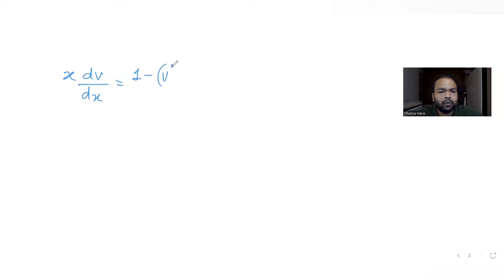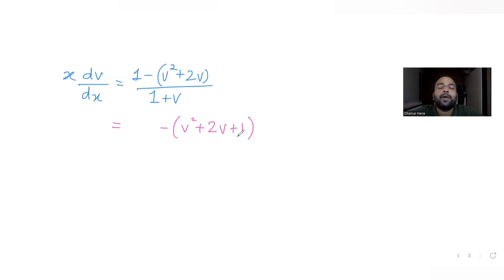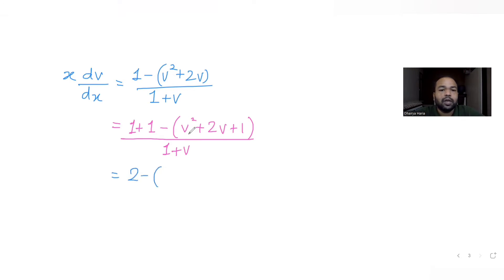Taking minus common from the numerator gives minus(v² plus 2v minus 1)/(1 plus v). I want to make the bracket a perfect square: I have v² plus 2v, so I need to add 1 to complete it — v² plus 2v plus 1 becomes (1 plus v)². Since I'm adding plus 1 inside a minus bracket, I'm effectively subtracting 1, so I compensate by adding 1 outside, giving 2 minus (1 plus v)² in the numerator.